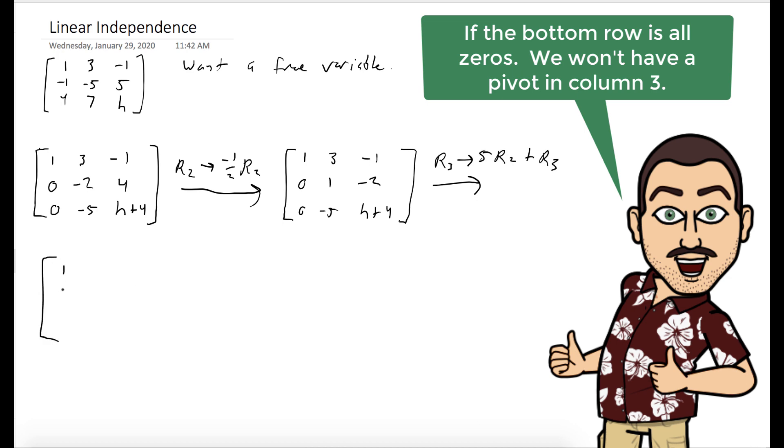As we'll see, that will put an h minus 6 as the only term in the bottom row. And so if we want there to be a free variable corresponding to x3, we need h minus 6 to equal 0. That is, h equals 6.